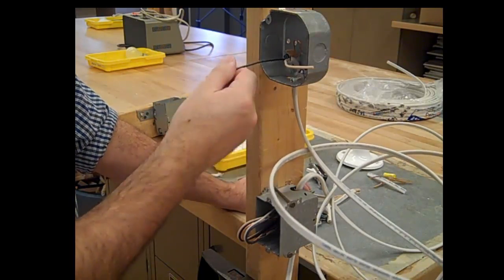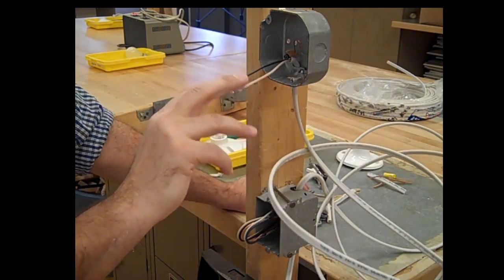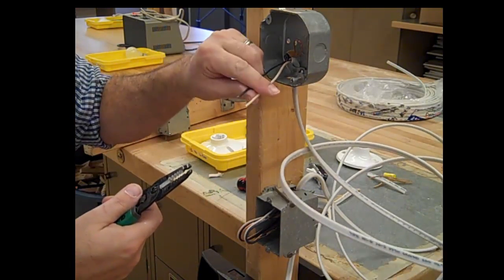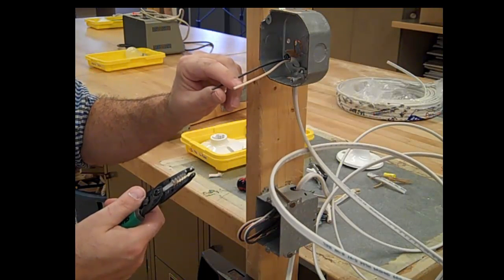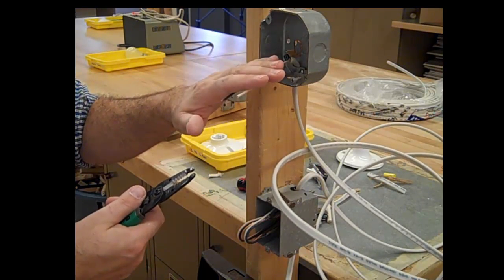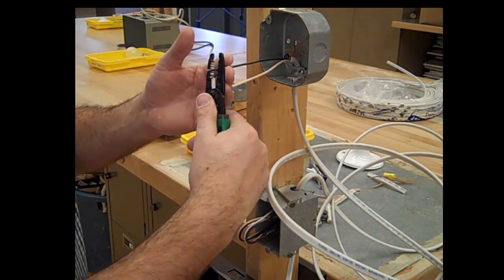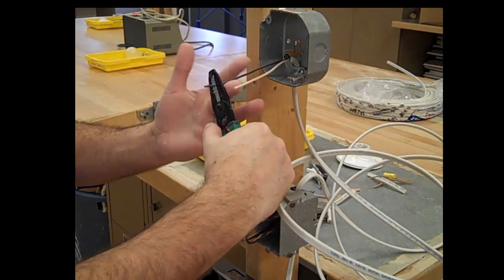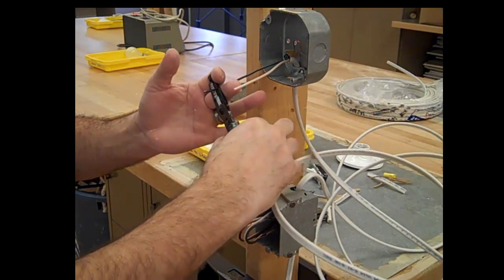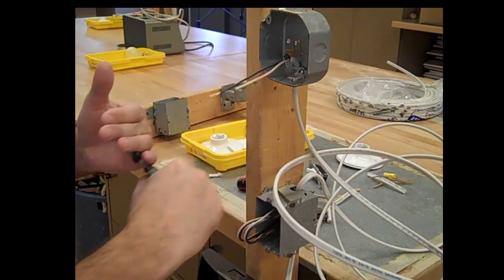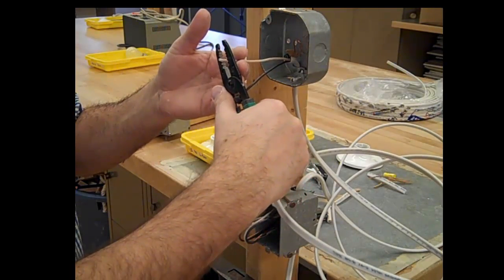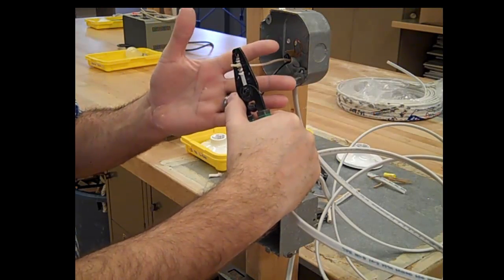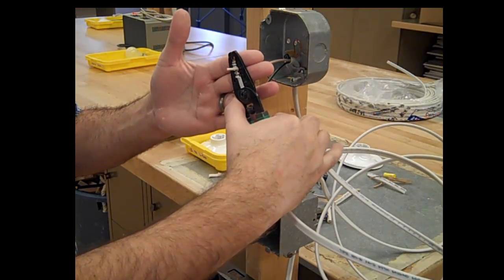The next thing we're going to do is strip back the ends of these two wires using wire strippers. This is 14 gauge wire. You're going to line it up with 14, go back about the thickness of your finger, squeeze, turn, put a finger on each side of the wire, loosen this hand just a little bit, wiggle and pull.